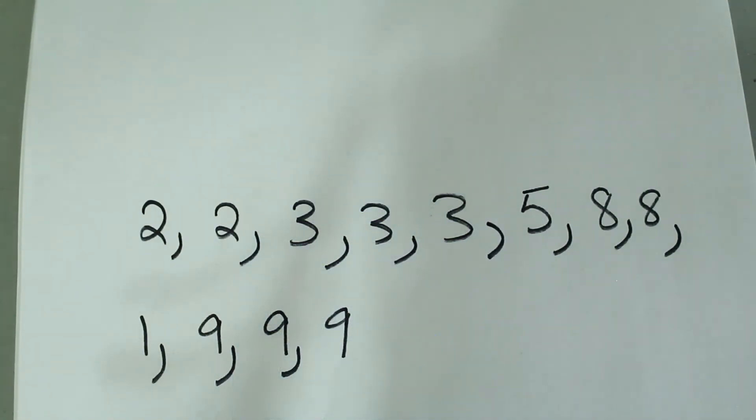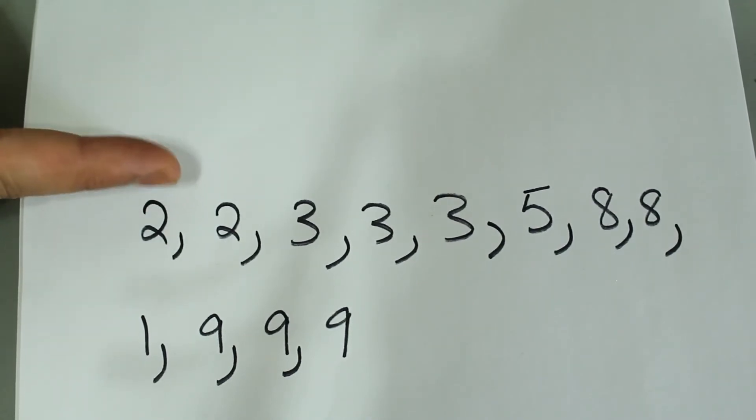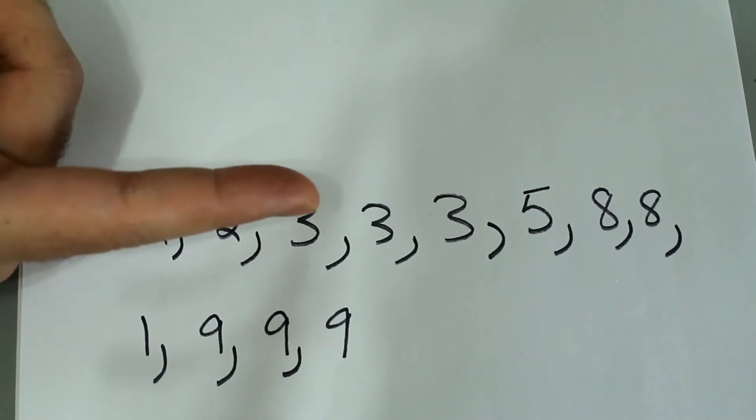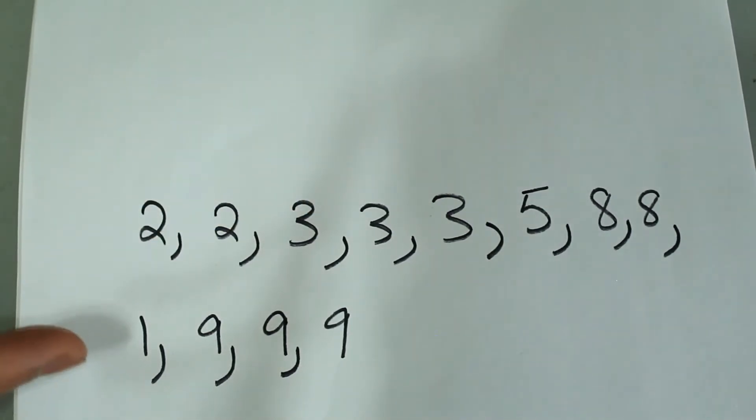The data set we're going to use this time is as follows. And notice that many of the entries are repeated. So 2 appears twice, 3 appears 3 times, 5 appears once, but 8 appears twice, 1 appears once, but 9 appears 3 times. So the frequency for some entries are more than 1. So you don't expect me to type in every single entry multiple times. So I'm going to use the frequency option.